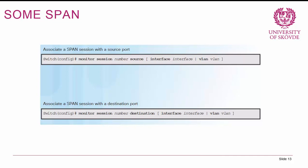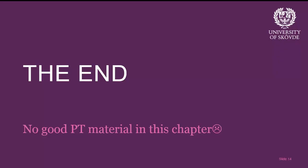To configure SPAN, first associate a SPAN session with a source port using 'monitor session [number] source [interface or vlan]', selecting the interface or VLAN to monitor. Then associate it with a destination port using 'monitor session [same number] destination [output port]' — specifying the port where mirrored traffic should be sent.